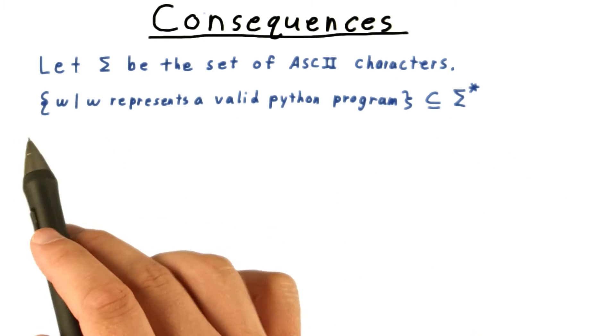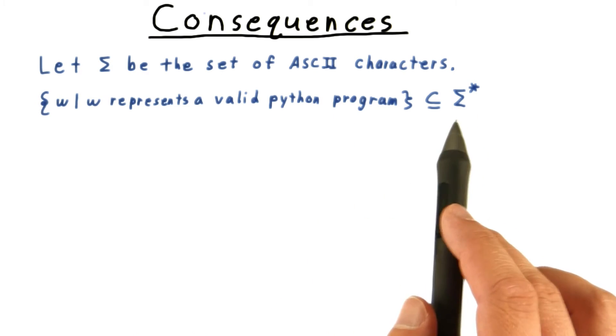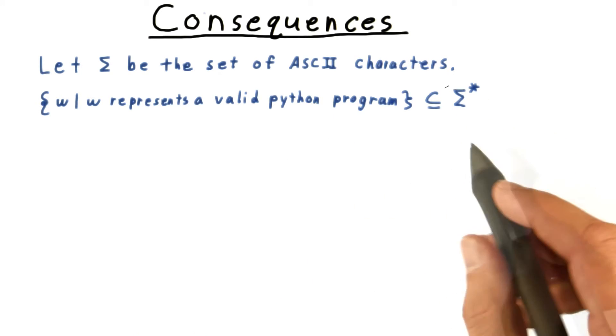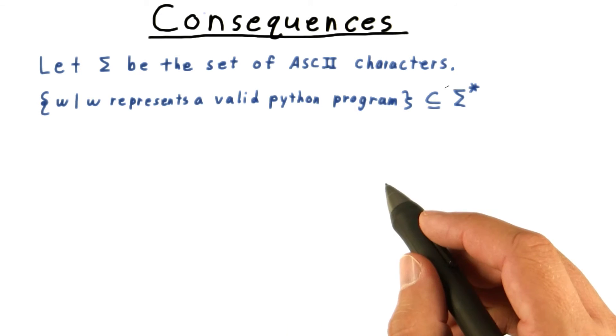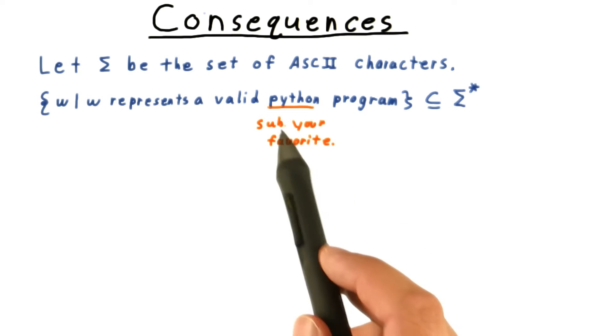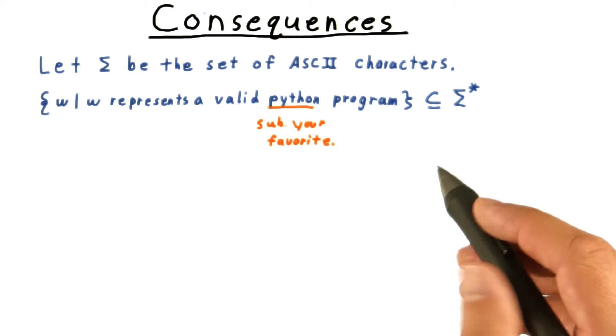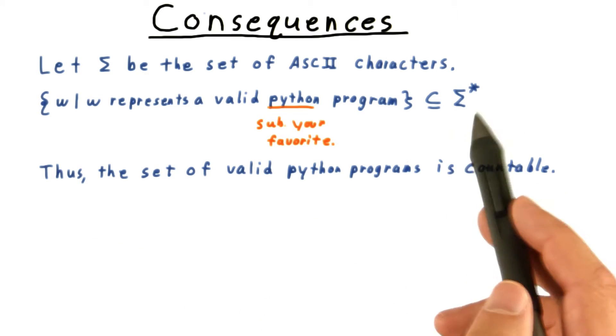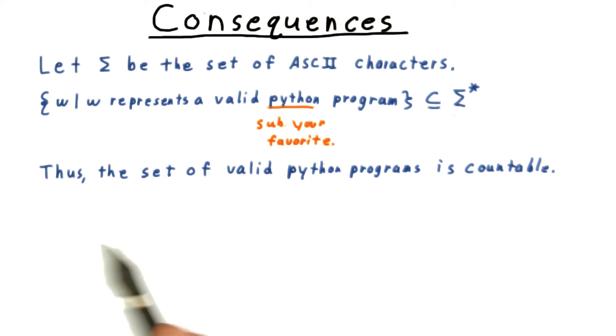Observe that the set of strings that represent valid Python programs is a subset of sigma star. Each program is a finite string after all. Note here that I chose Python arbitrarily. You could choose any language or set of languages if you liked. Well, since this set is a subset of the countable set sigma star, we have that it is countable. Thus, there are a countable number of Python programs.